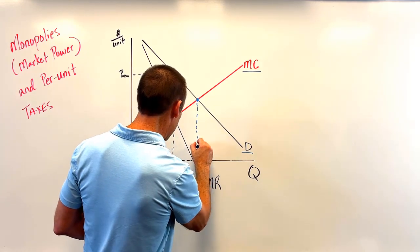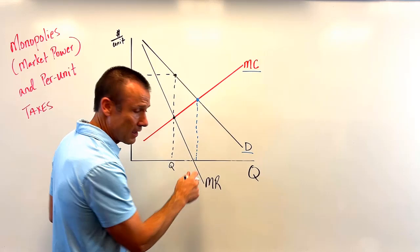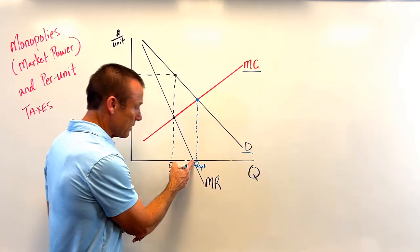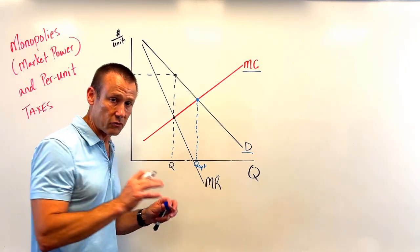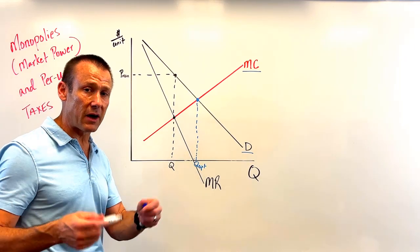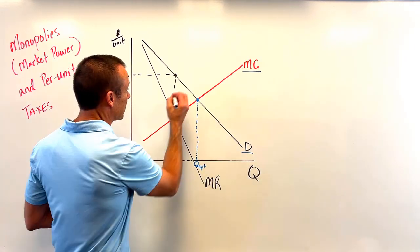It absolutely does not need to hit the horizontal axis right where MR is crossing. I always want to make sure that we're clear on that point. But now we can find that deadweight loss.